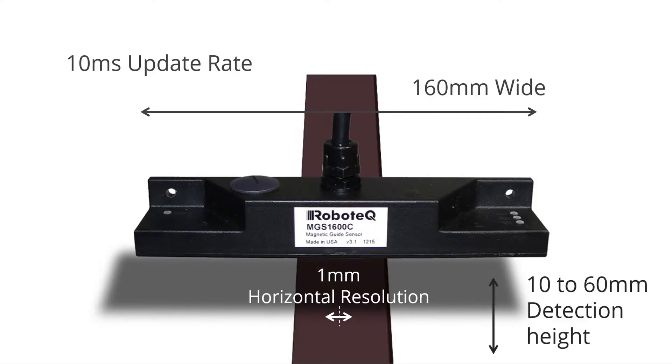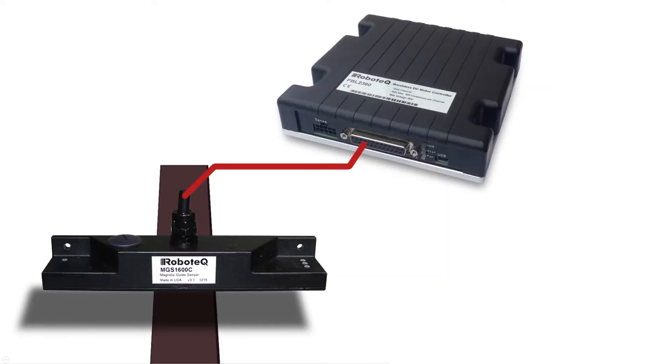The sensor detects the position of the tape with one millimeter accuracy. This information is sent to the motor controller via CAN bus.